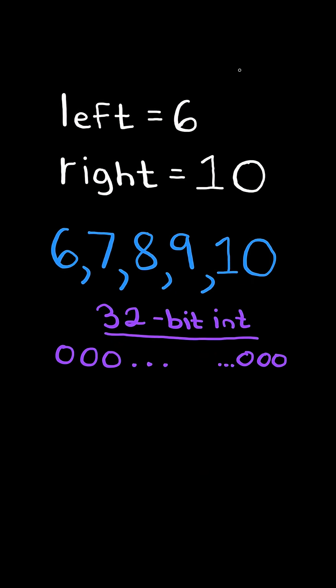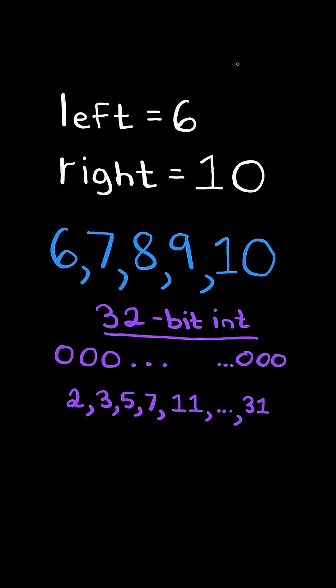First, notice that an integer is a 32-bit binary value. With this knowledge, we know beforehand all possible prime numbers of set bits. We will define this as a set.